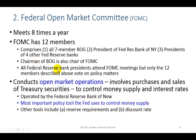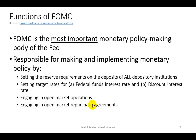Open market operations, which involves the purchase and sale of U.S. Treasury securities as a way to control money supply, is the most important policy tool that the Fed uses. The FOMC is responsible for implementing monetary policy through its authority to set reserve requirements on the deposits of all depository institutions. They also set target interest rates for the Federal Funds rate — the interest rate that banks pay one another when they borrow and lend among themselves — and the discount rate, which is the interest rate that the Federal Reserve Bank charges banks that borrow from it.